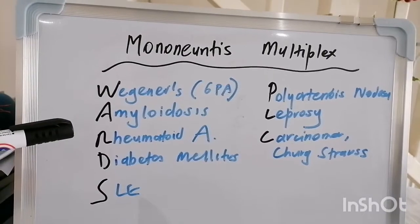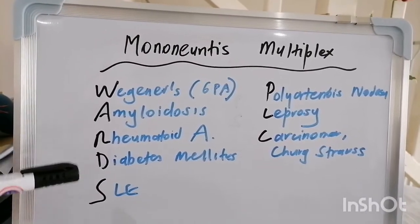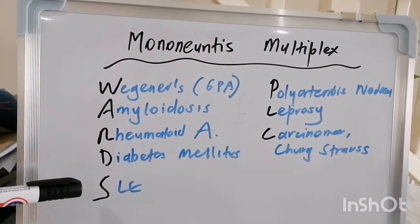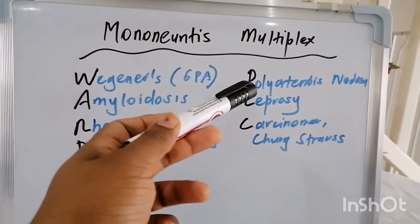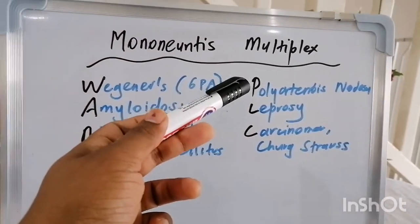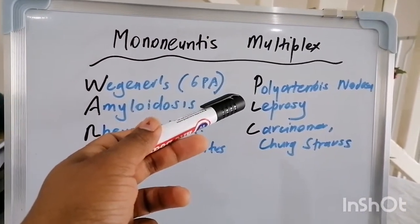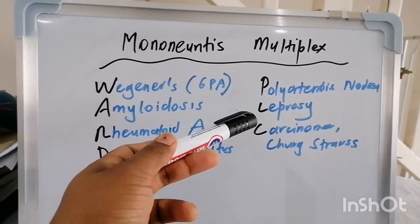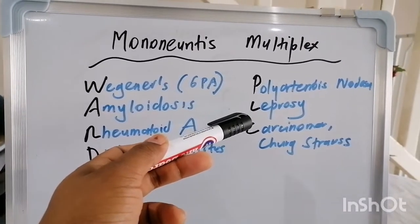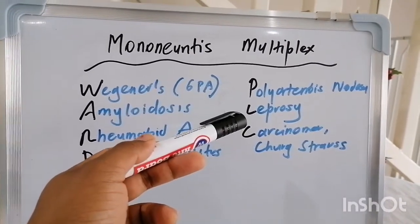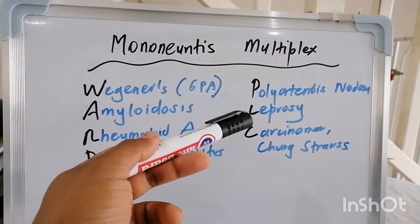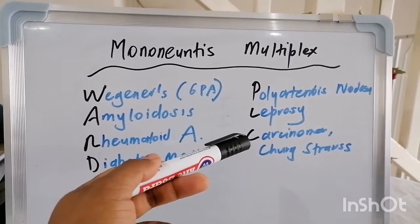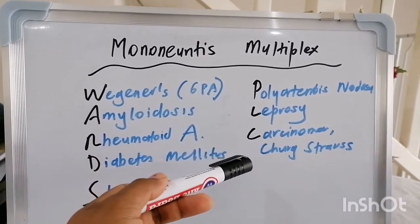R is for rheumatoid arthritis, D for diabetes mellitus, S for SLE — systemic lupus erythematosus. P stands for polyarteritis nodosa, which is a medium vessel vasculitic syndrome. L is for leprosy, caused by Mycobacterium leprae — these patients often have hypo- or anesthetic macules accompanying the nerve involvement.